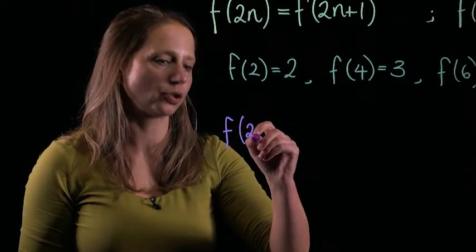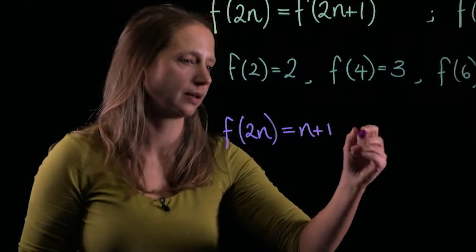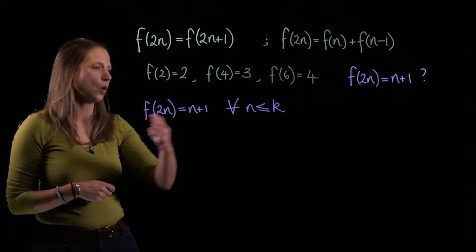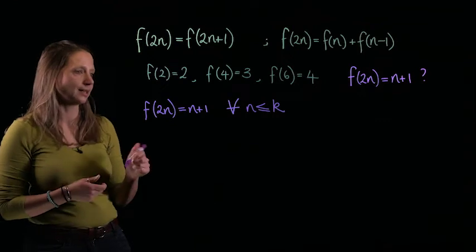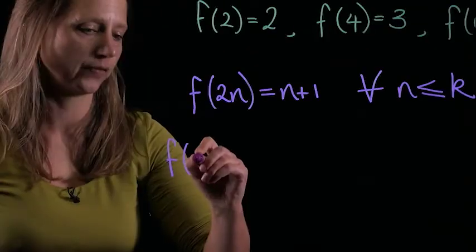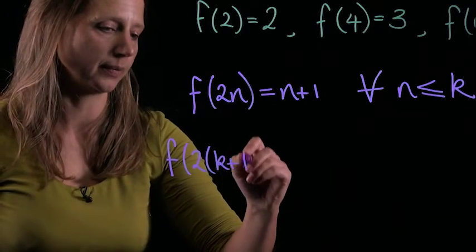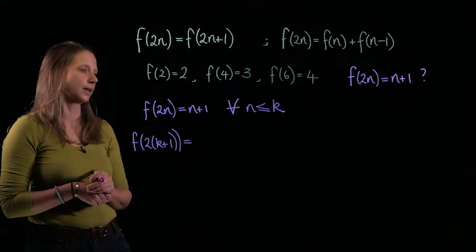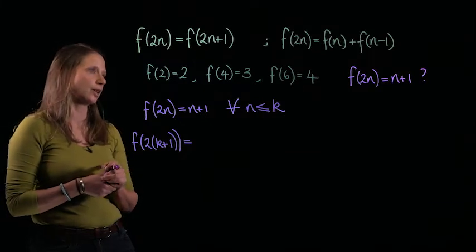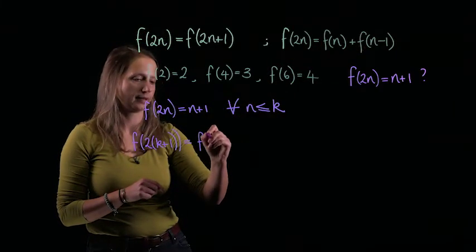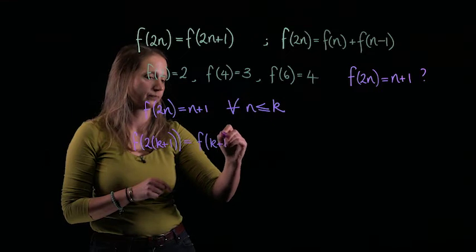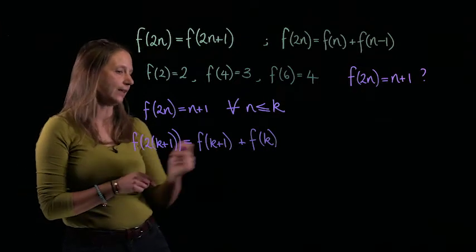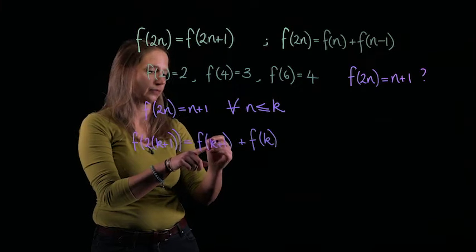So we're going to say that f of 2n is equal to n plus 1 for all values of n less than or equal to k. So it's true all the way up to some point k. And now we need to consider k plus 1. So let's think about f of 2 times k plus 1. Now we have two different cases here because we've got to think about it when k is even and when k is odd. But straight away, we can rewrite this as f of k plus 1 plus f of k. And if k is even, this will be the same as f of k. So let's take case 1.